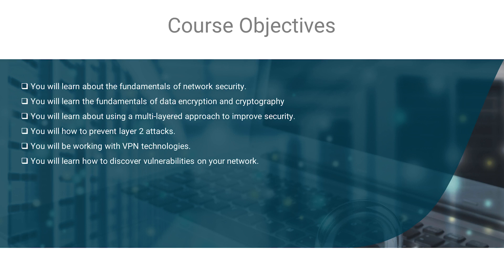In this course, you will learn about the fundamentals of network security and the fundamentals of data encryption and cryptography. We'll also cover the need for implementing a multi-layered approach to improve network security, various types of layer two attacks and how they can be prevented, and using VPN technologies to prevent unauthorized persons from intercepting your data while it is in motion between a source and a destination. Finally, you'll get hands-on experience using popular tools within the cybersecurity industry to discover vulnerabilities on your network and systems.